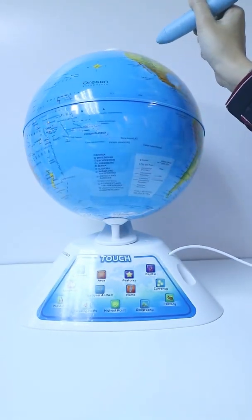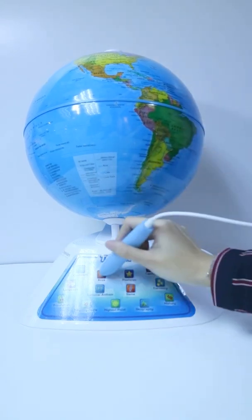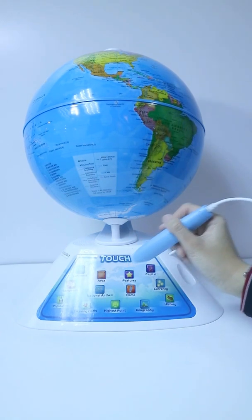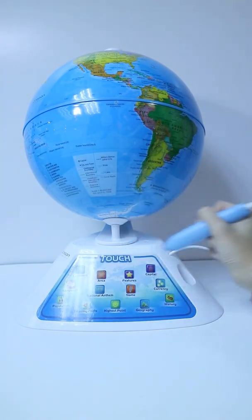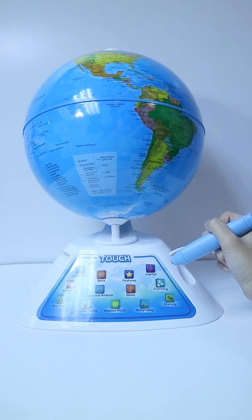North America is the third largest of the seven continents. Go exploring in North America and you will find three big countries: Canada in the North, the United States of America in the middle, and Mexico in the South.